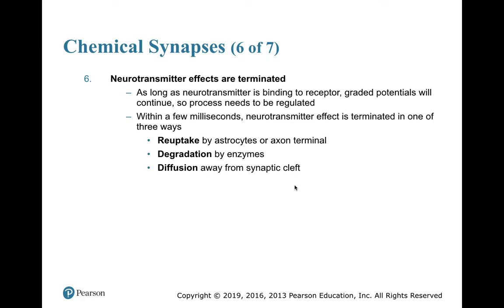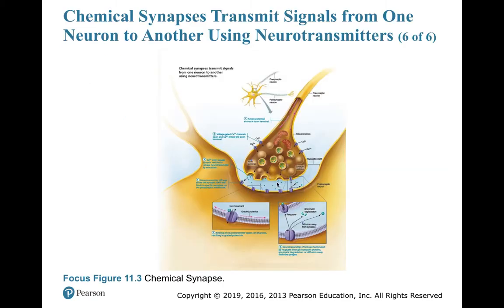Neurotransmitters must then be degraded, because as long as the neurotransmitter remains, graded potentials will continue. Within a few milliseconds, neurotransmitters are terminated either by reuptake into the axon terminal of the presynaptic neuron, uptake by nearby astrocytes, degradation by enzymes in the synaptic space, or by simply diffusing away from the synaptic cleft.